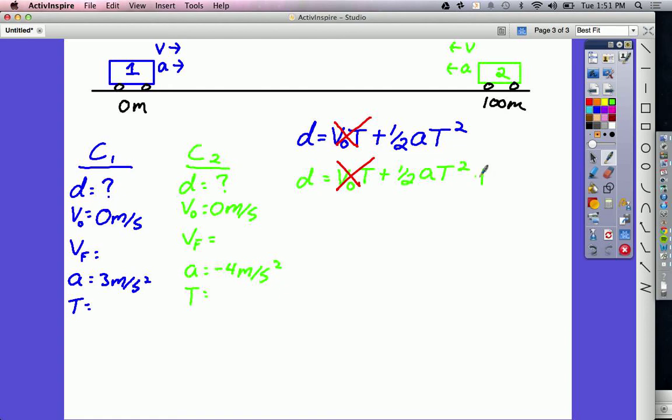So, how would we fix this? How we fix this is we write directly into the equation that car 2 has a 100 meter head start, or it's 100 meters away. So, I add in that 100.